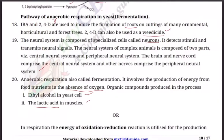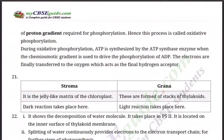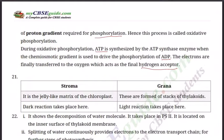There is a choice for this question: Explain oxidative phosphorylation. In respiration, the energy of oxidation-reduction — redox reactions — is utilized for the production of a proton H+ gradient required for phosphorylation. Hence the process is called oxidative phosphorylation. During oxidative phosphorylation, ATP is synthesized by the ATP-synthesizing enzyme when the chemiosmotic gradient is used to drive phosphorylation of ADP. ADP plus inorganic phosphate becomes ATP. Electrons are finally transferred to oxygen, which acts as the final hydrogen acceptor.